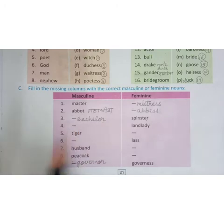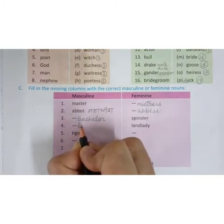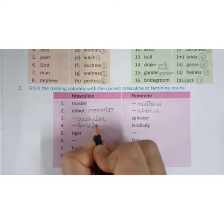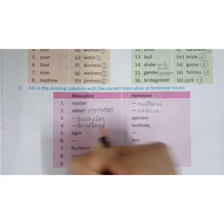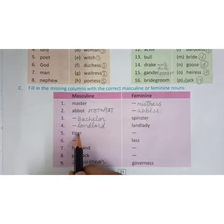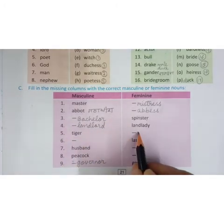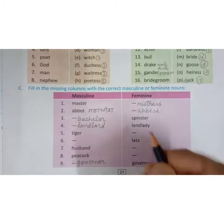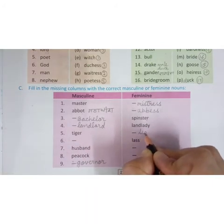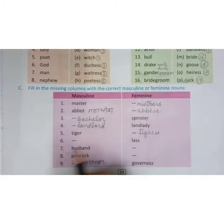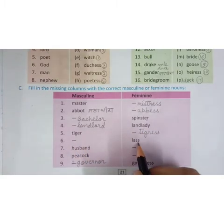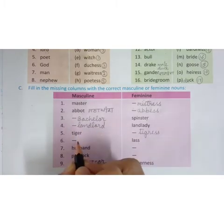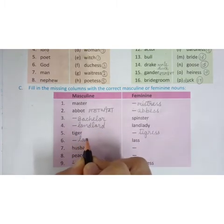Next word is landlady. Landlady's masculine is landlord. Tiger is masculine, feminine is tigress. Lass means woman. Its masculine is lad.